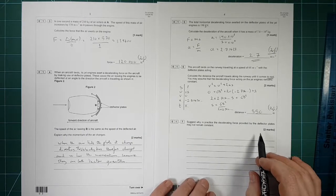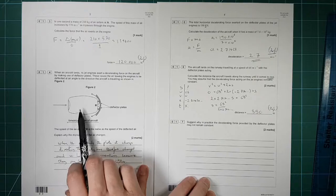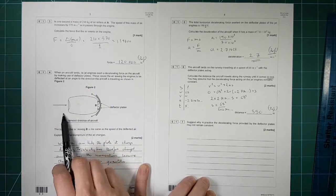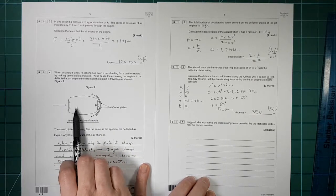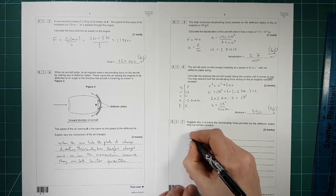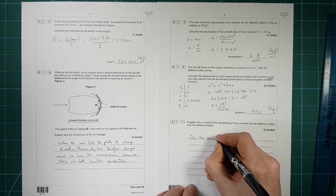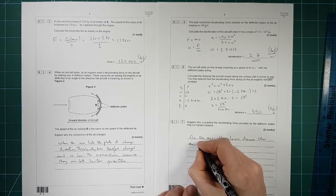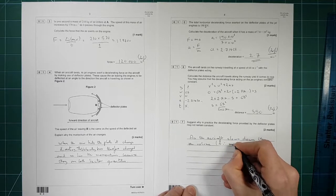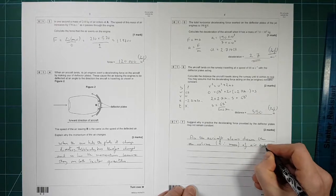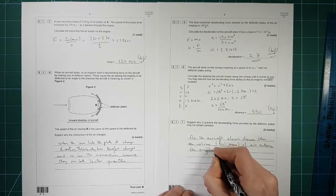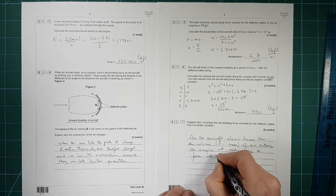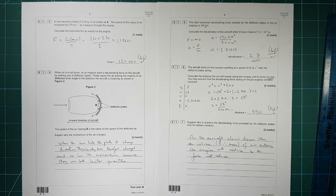So just why in practice the decelerating force provided by the deflector plates may not remain constant. Well, if you think about this, then the force provided is due in part to the velocity, but also it's in part to the mass, the amount of air that's entering the engine. As the engine slows down, less air will enter the engine. So less mass of air will enter the engine. So that will be smaller there. So we need to write that down. As the aircraft slows down, then the volume and therefore mass of air entering the engine will reduce. So the force will reduce. And that is the end of question 1.